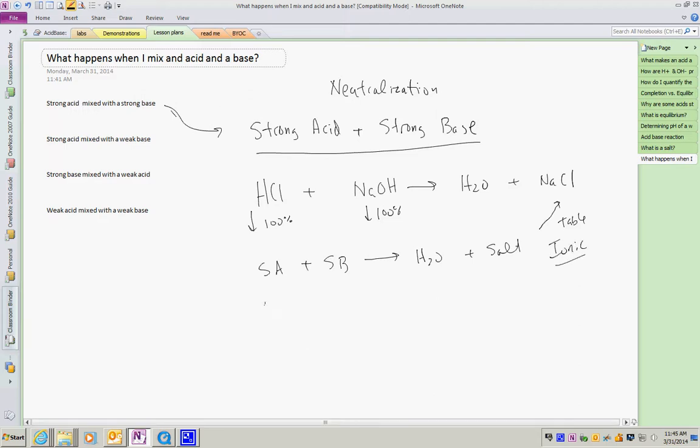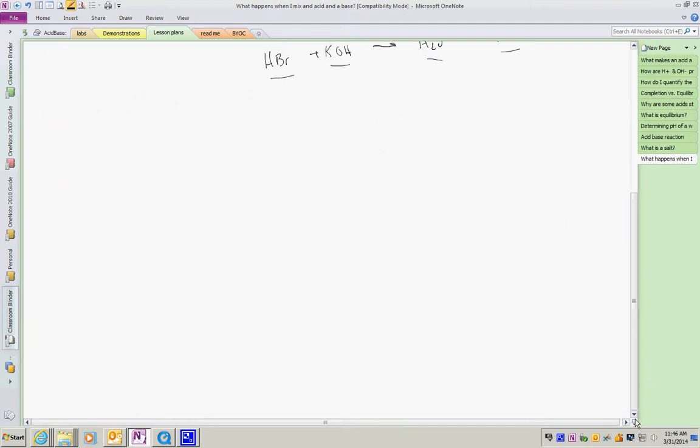So I could do HBr, strong acid, plus KOH, my strong base, yields H2O plus KBr. Again, acid plus a base yields salt and water. Pretty standard neutralization reaction.